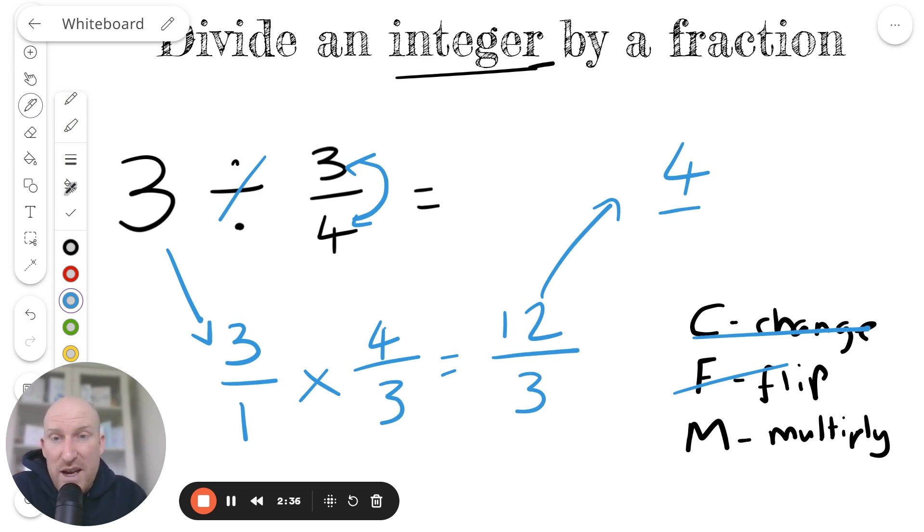When you divide an integer by a fraction, you almost always end up with a larger number than what you started with. So if you do get an answer like that, it's not that you're wrong. That's just what it is.